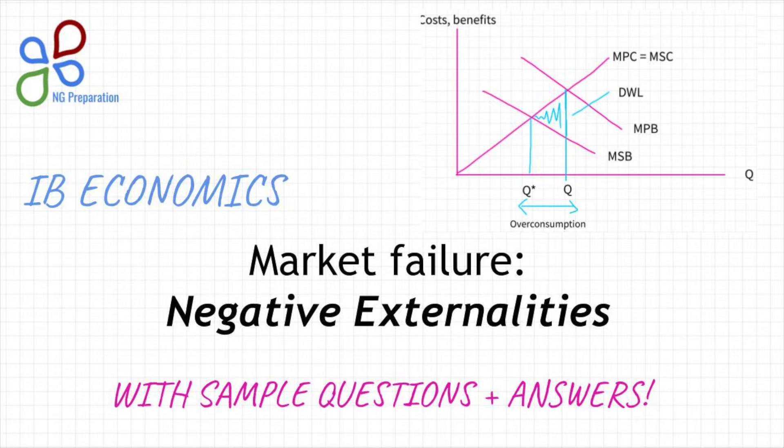Just to recap, market failure in itself is just a failure of any market to achieve allocative efficiency. Allocative efficiency is where marginal benefit equals marginal cost. It's a way of allocating resources in a way that is socially optimal and maximizes community surplus or the sum of consumer and producer surplus.